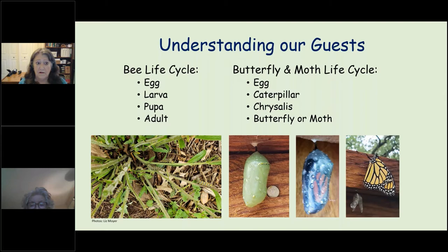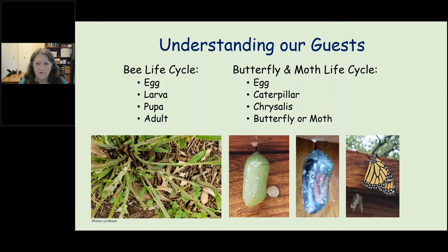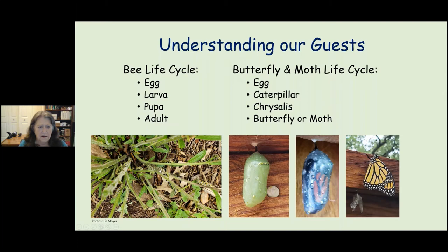To understand what bees and butterflies need, we need to look at their life cycles. Both start with eggs. Butterflies have caterpillars; bees go straight to larva and pupa before becoming flying adults. Monarch caterpillars will eat milkweed down to the nub — but that's okay because in two weeks it will be right back, all leafed out and blooming.